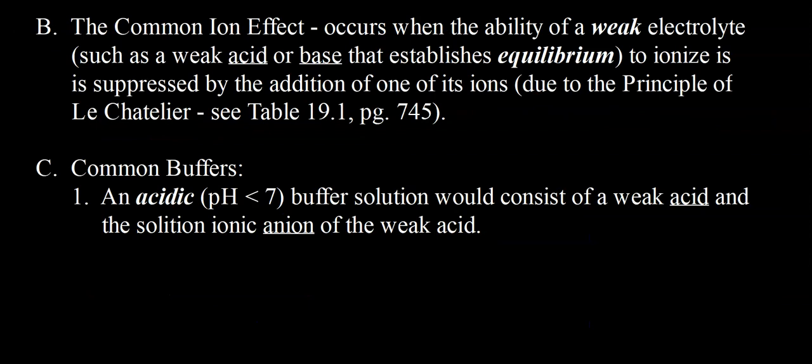Here's where the common ion effect comes into play. The common ion, as the name implies, is an ion that is in common with something in your system. It occurs when the ability of a weak electrolyte — such as a weak acid or weak base — to ionize is suppressed or lessened by the addition of one of its ions. So if you have a solution of a weak acid with H+ and A− ions in solution, and you add some A− ions to that solution, it's going to push the equilibrium to the left, and the amount of acid that ionizes will decrease.